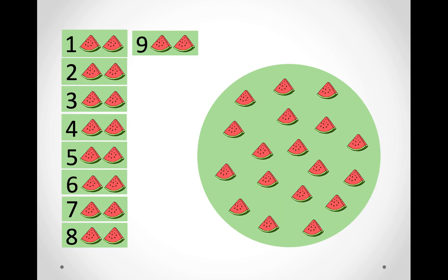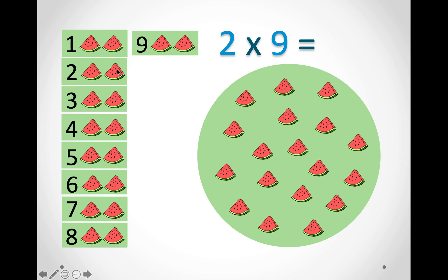In this picture we have nine groups and in each group there are two slices of watermelon. So we can say two times nine and count in twos: two, four, six, eight, ten, twelve, fourteen, sixteen, eighteen. So there are eighteen slices of watermelon.